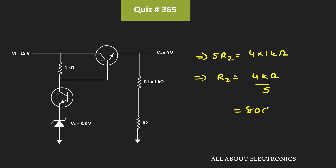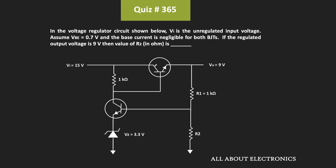That is equal to 800 Ohm. The value of resistor R2 is equal to 800 Ohm, and with this value of R2, the regulated output voltage will be equal to 9V. So for the given circuit, the value of R2 is equal to 800 Ohm.